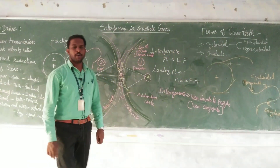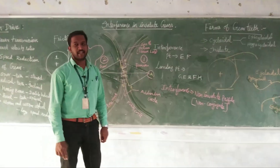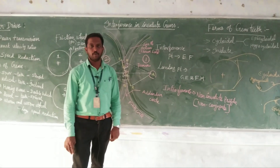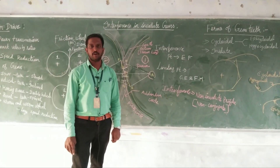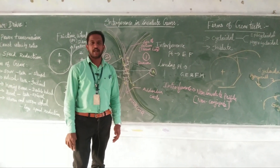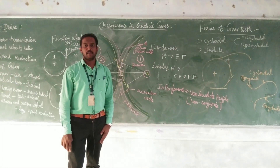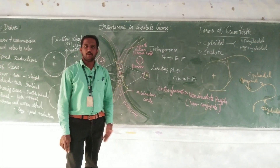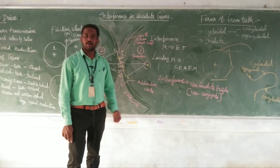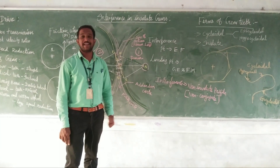In this video, we are going to see about interference in involute ears. In the previous video, we had seen about the forms of teeth - one is involute and one more is called cycloidal. In cycloidal teeth, we could not have that interference drawback, but in the involute profile, we have a drawback of interference.